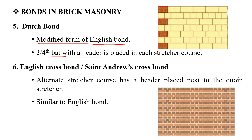The English cross bond and St. Andrew's cross bond are similar to English bond, but there is a difference. The header cross arrangement differs, and the English cross bond is the same as St. Andrew's bond.